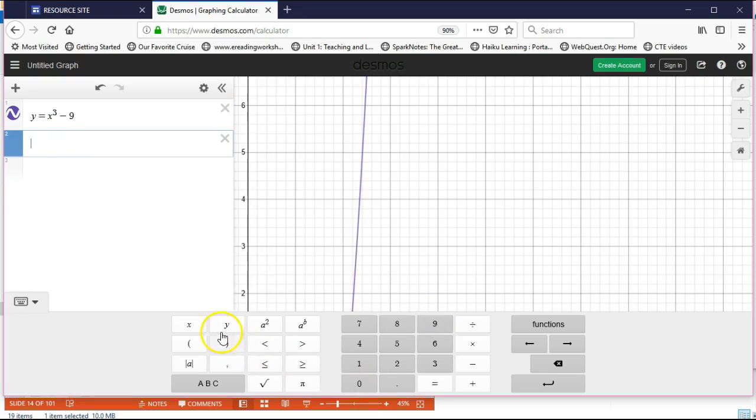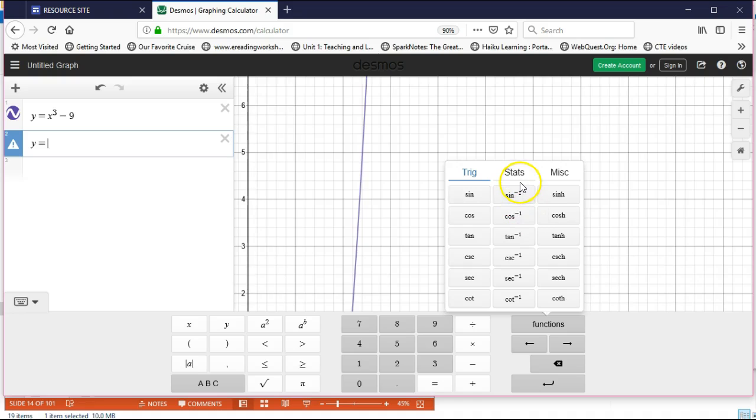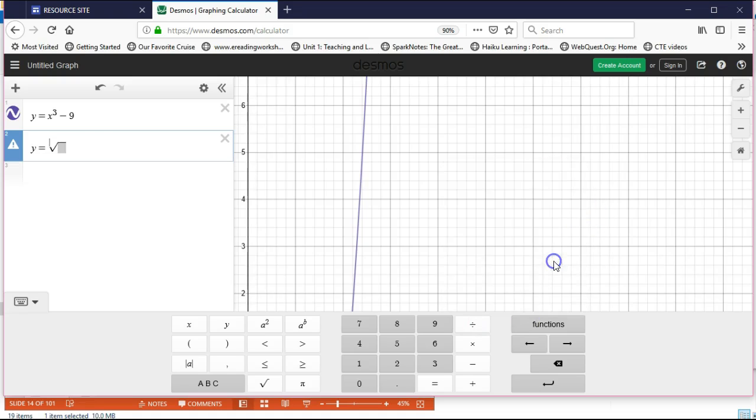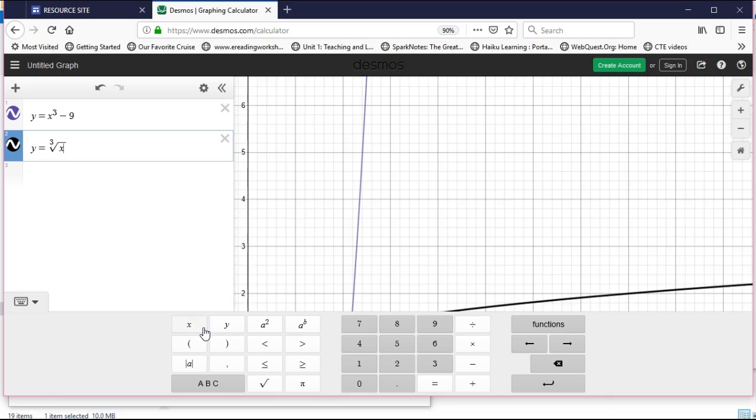Our second equation would be y equals the cube root. Instead of using the square root, I'm going to use my cube root function. So I'm going to write this as the cube root of x + 9.